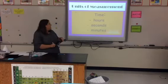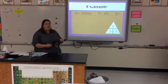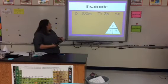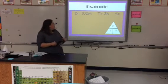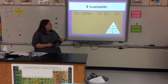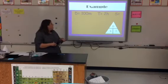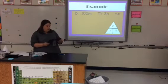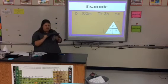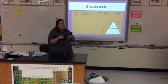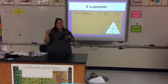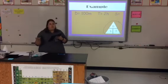Let's look at an example to see where those units of measurement fit in. In this example, I have a distance of 100 meters and a time of two hours, and I am looking for speed. One thing we're going to use is called the distance-speed-time triangle. On the board, I've got this triangle with distance on top and speed and time on the bottom. I can use it to help solve for whatever variable I'm missing.